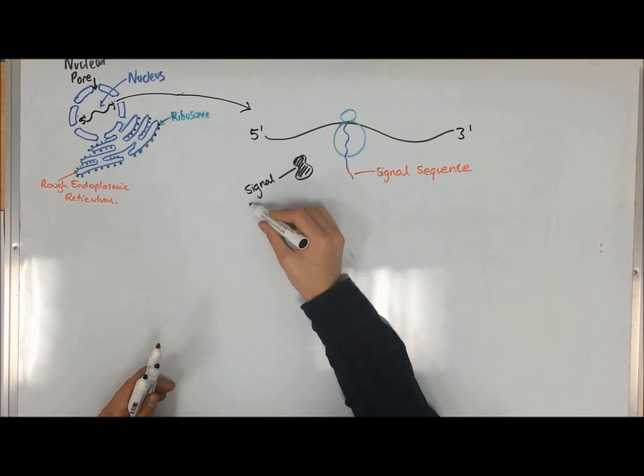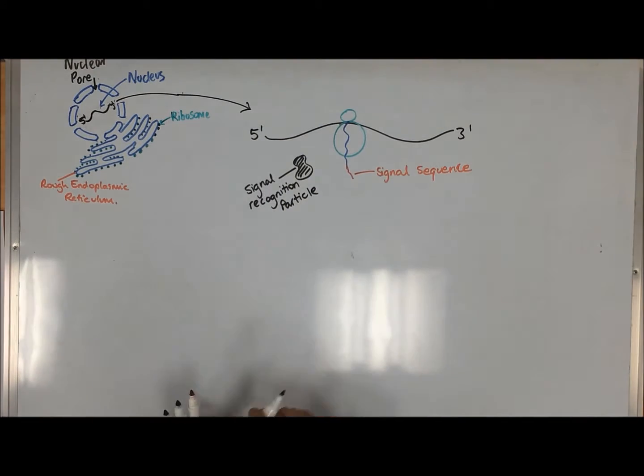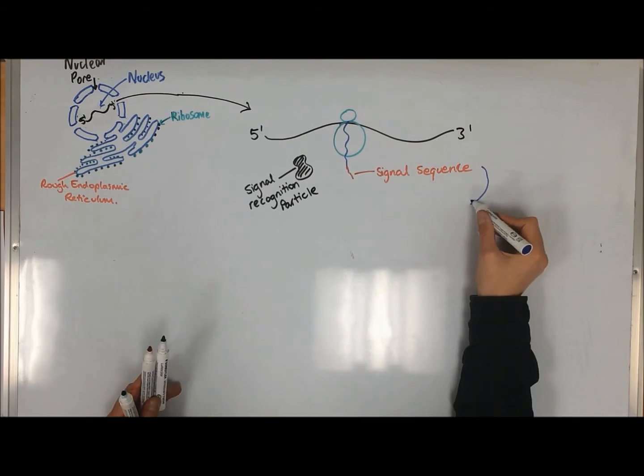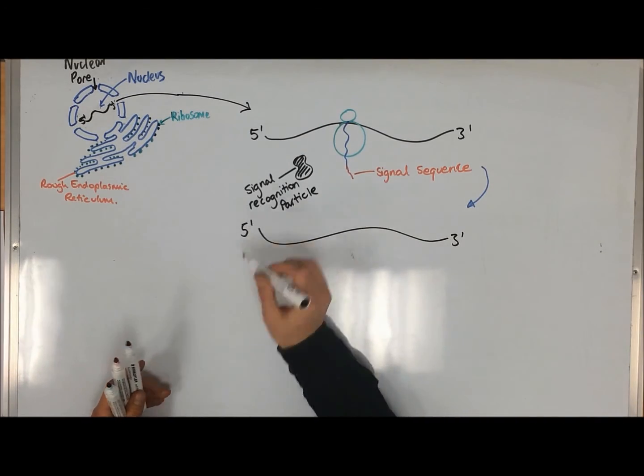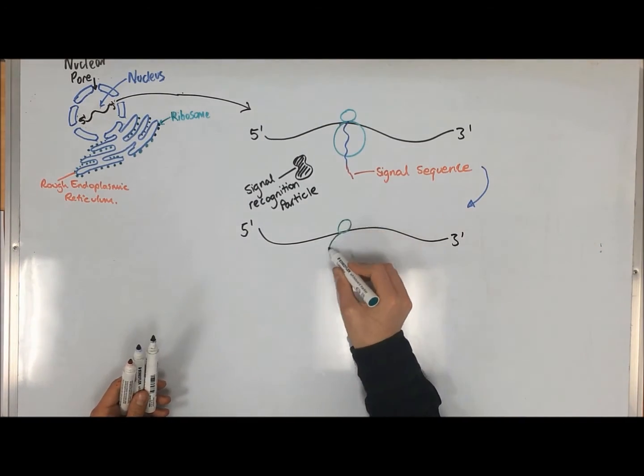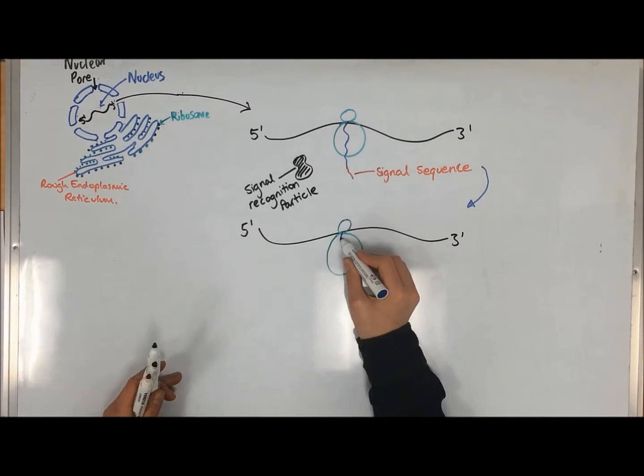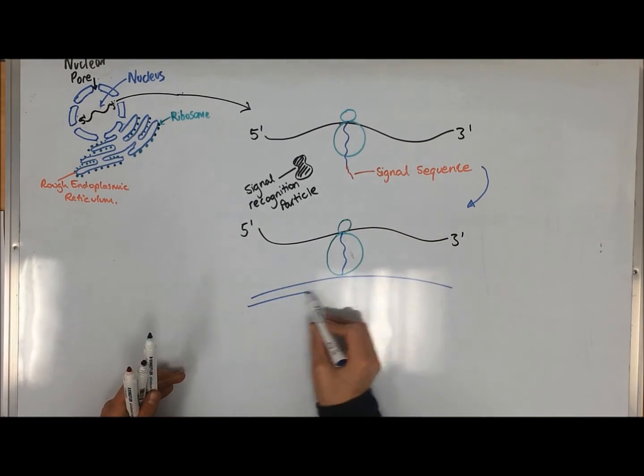The signal recognition particle, which is present in the cytosol, is a large hydrophobic pocket lined with methionine. It travels in the cytosol and ER membrane, binding to the signal sequence and large ribosomal subunits.